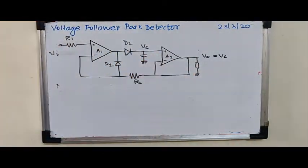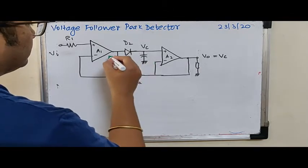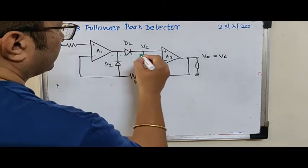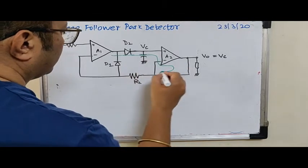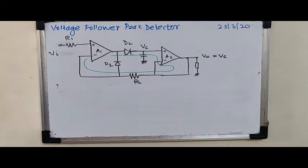hence its output, that is EO is equal to Vc. So again you can see here this is the voltage follower. Now you can see here it is a very interesting configuration. Because this entire thing, you can see here, so it acts as, A1 and A2 acts as a single voltage follower. If you look at this loop.